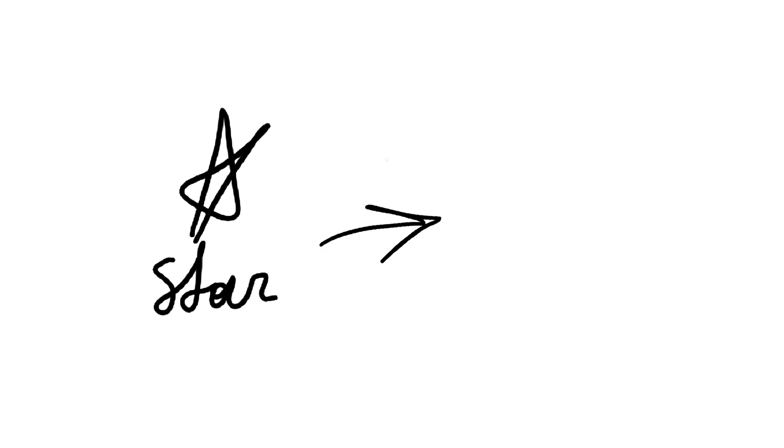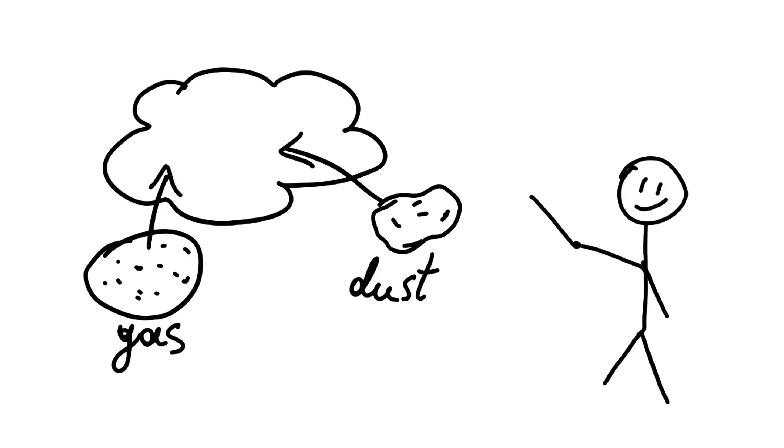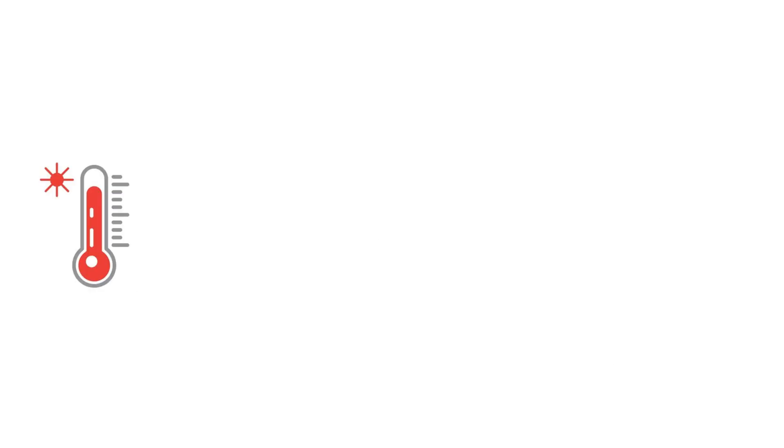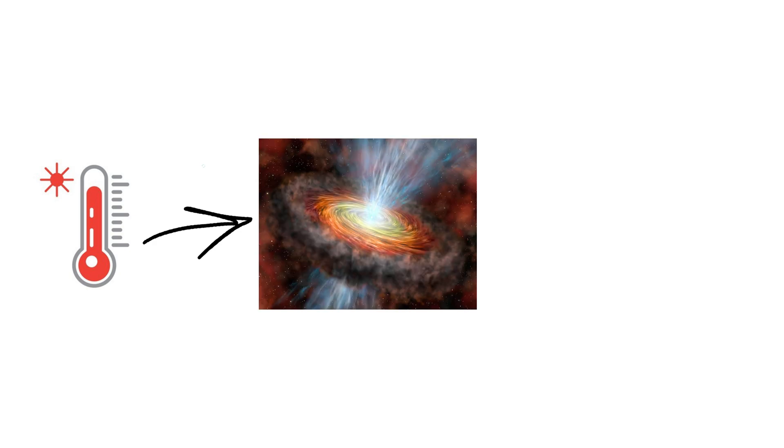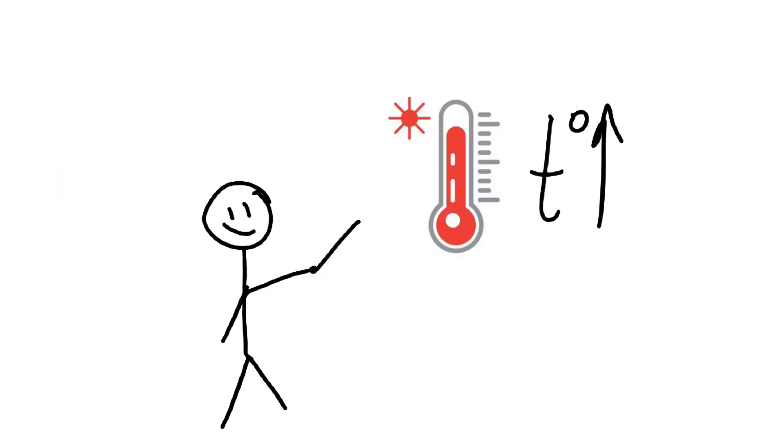These are the very first stage in the life of a star. Imagine a giant cloud of gas and dust in space. Over time, gravity pulls this cloud together, making it shrink and get hotter. This creates a protostar, which is like a baby star. Inside the protostar, temperatures and pressures keep rising.